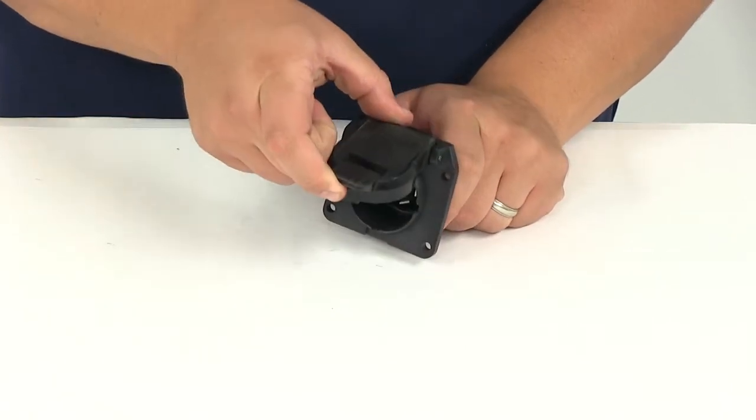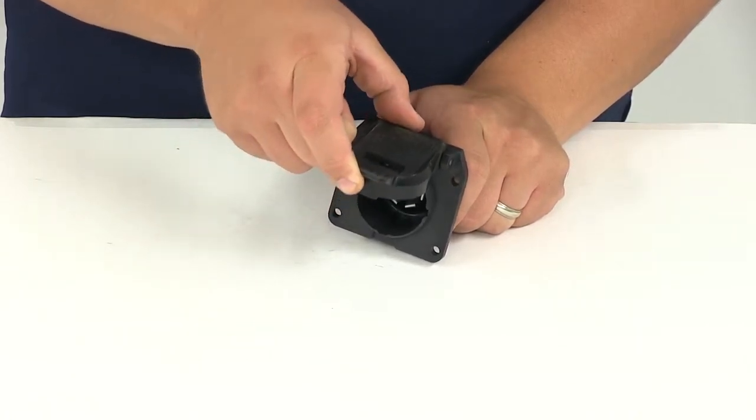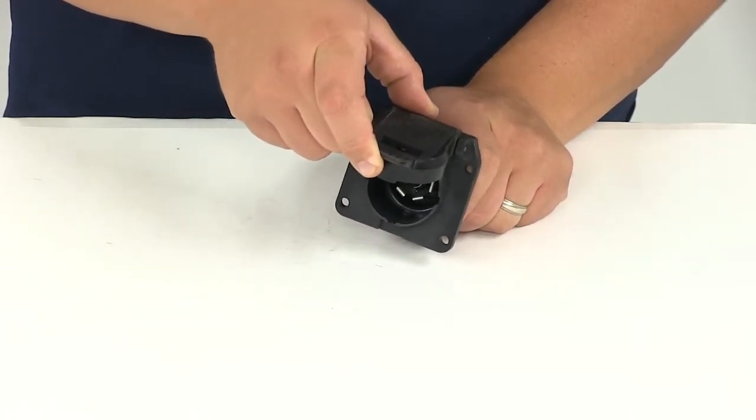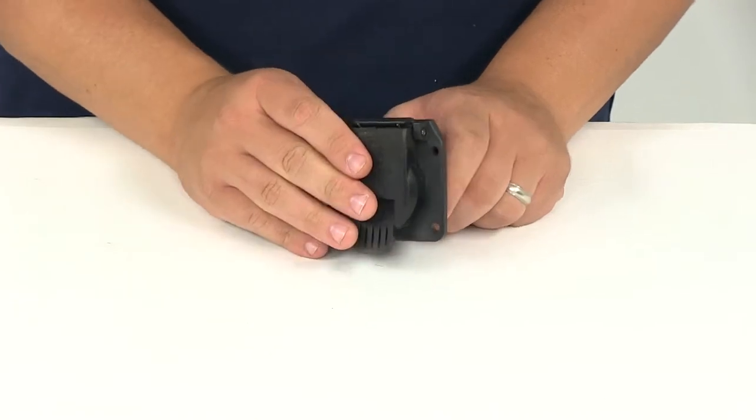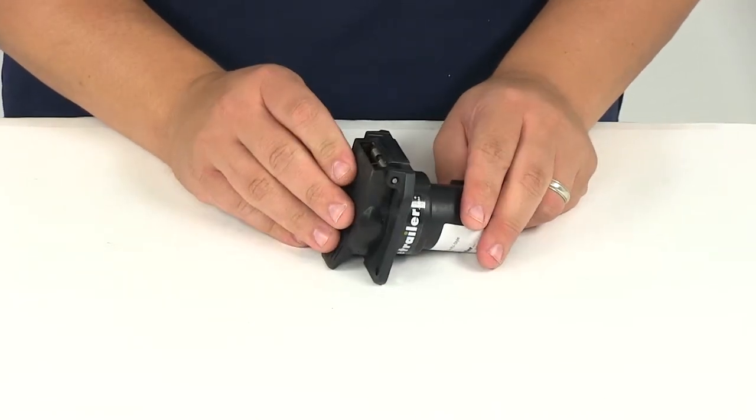It also features a drain slot that has an angle designed for drainage if moisture gets in there close to your connection points. It also secures the trailer end connector inside the socket.